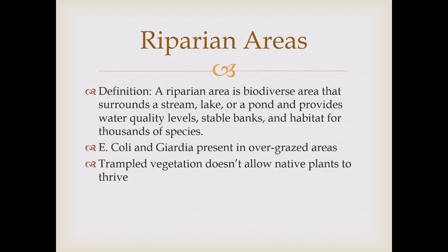E. coli and Giardia develop in these overgrazed riparian areas, and both can induce vomiting and diarrhea in animal and human species. I've worked with a few guys who have gotten Giardia, and they said it is not fun at all. The trampled vegetation doesn't allow native plants to thrive again, invasives move in, and essentially there ends up being a total takeover — requiring huge, costly projects to get rid of the invasive species.